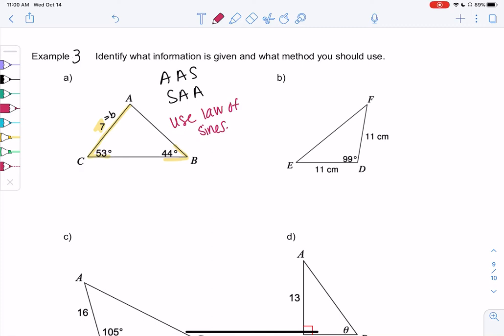And how about part B? Part B, we have different letters, but that's okay. Angles E, D, and F. Angle D is given at 99. Side F, opposite of F, would be 11. And side E, because it's opposite E, would also be 11.